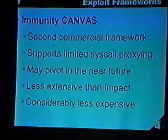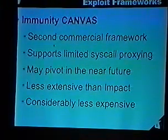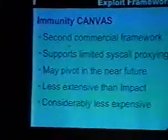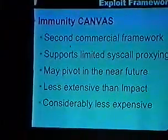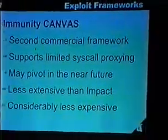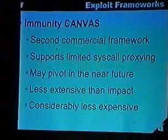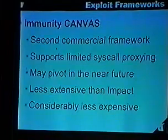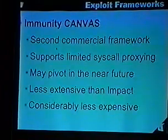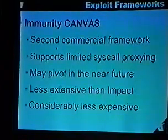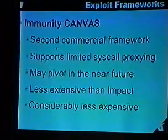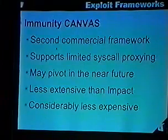The second commercial product is Immunity Canvas. It came out in early 2002 and is designed to run on any platform that supports Python and the GTK toolkit — currently Windows and Red Hat Linux. It supports some limited syscall proxying and has a decent set of exploits, around 60 to 70. It may do attack pivoting in the near future but doesn't right now. It's less extensive than Core Impact, but it's also about $14,000 cheaper.